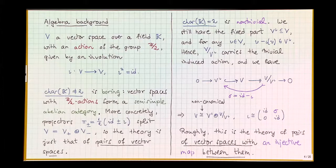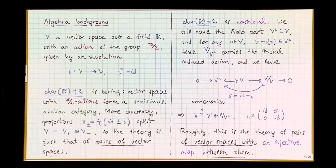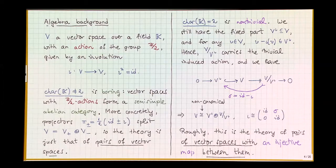What happens if the characteristic equals two? It's sufficiently non-trivial to be interesting. You can always take the fixed part — vectors fixed by the involution — they form a linear subspace. Over characteristic two we can no longer divide by two, but we can still take v − ι(v) or v + ι(v), which are the same. No matter what you start with, v + ι(v) is always an invariant vector, because applying ι seems to change sign but minus one is plus one. This subspace is invariant, and the induced action on the quotient is also trivial.